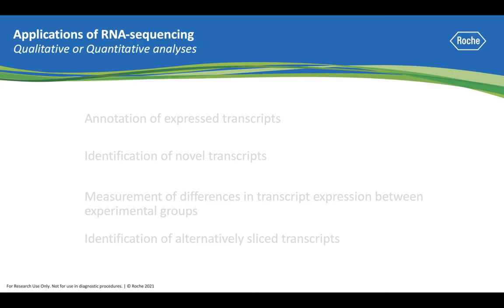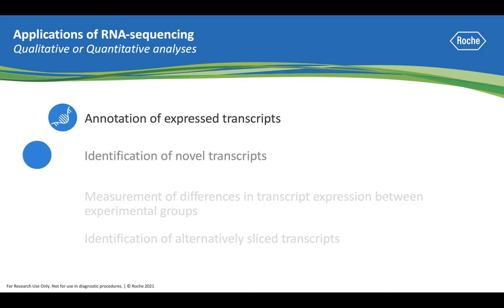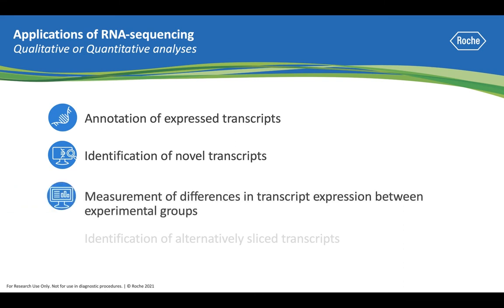Some examples of qualitative information that can be gained from RNA-seq are the annotation of transcripts expressed in a particular cell type, or the identification of novel transcripts. Some examples of quantitative data include the measurement of differential gene expression between different samples, such as treated or non-treated samples, healthy and diseased tissues, and different developmental stages, or the identification of alternately spliced transcripts, perhaps in response to an external stimulus.